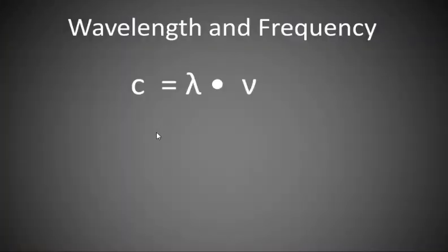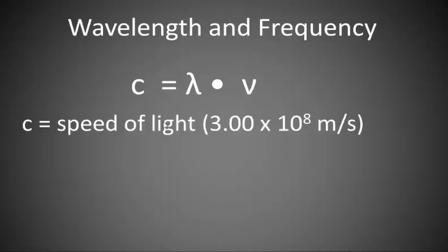With anything in chemistry, there is math a lot of times that goes with it. So here's an equation that will tell us how the wavelength and frequency are related. We have c, which is the speed of light, which is 3 times 10 to the 8th meters per second.